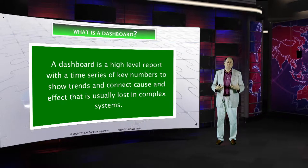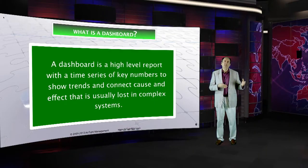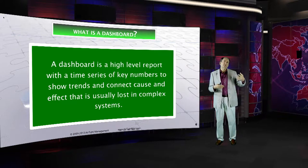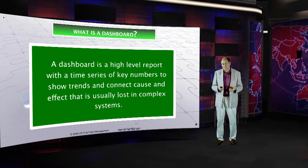So what is a dashboard? Here's the definition we use: a dashboard is a high-level report always with a time series of key numbers to show trends and to connect cause and effect that usually is lost in a complex system. What it does is line things up in columns by month so that you can see the delayed impact of things happening in your business — for example, if you run a marketing campaign in January, you may not see the effect until February or March — and you want to be able to relate and understand the cause and effect of what's happening.